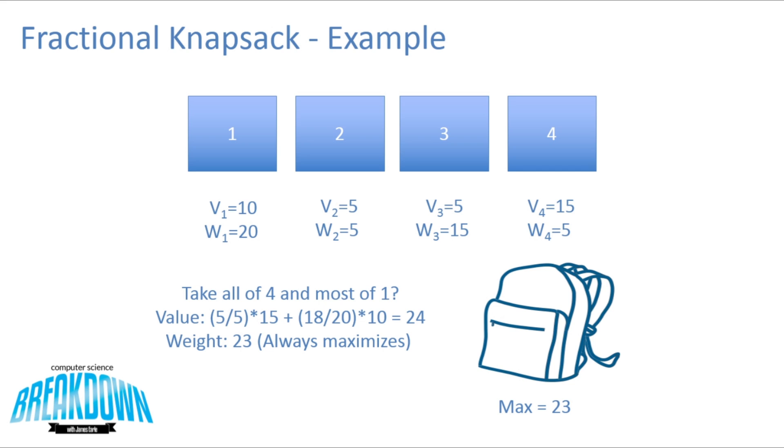So if we look at the rest of these, we can actually take the one that has the highest value, which would be one, but we would only take 18 20ths of it. So we would only be able to increase our value by 18 20ths times 10, which is just the same as nine. So it's just 18 over 20, which is the percentage of that item we're taking, times the value, and that's how much we can increase our value. But we always try to maximize the weight in the fractional problem. Because there's no case, unless of course you run out of items, that you can't just continue taking more of a fraction of the next item until the bag is full.